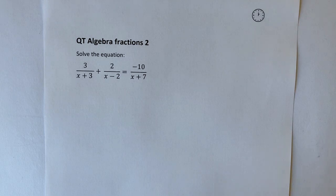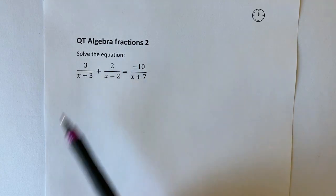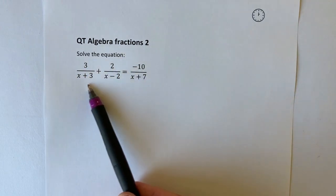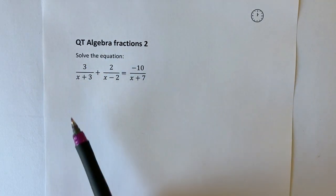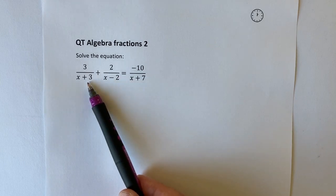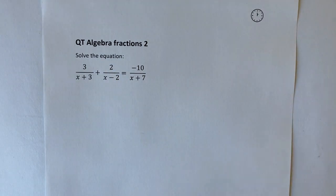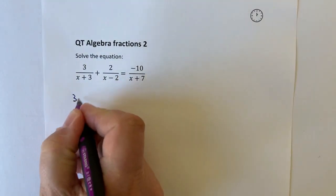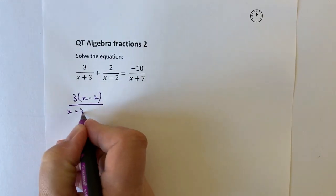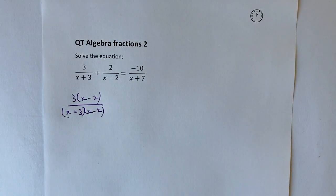The issue I've got initially is that both of these denominators are different to each other, so I need to make them both the same. If we look at the first fraction, in order to make the denominator the same, I'm going to multiply by x minus 2. Because I've multiplied the bottom by x minus 2, I've got to multiply the top by x minus 2. So what I end up with is 3 times (x-2) divided by (x+3) times (x-2).